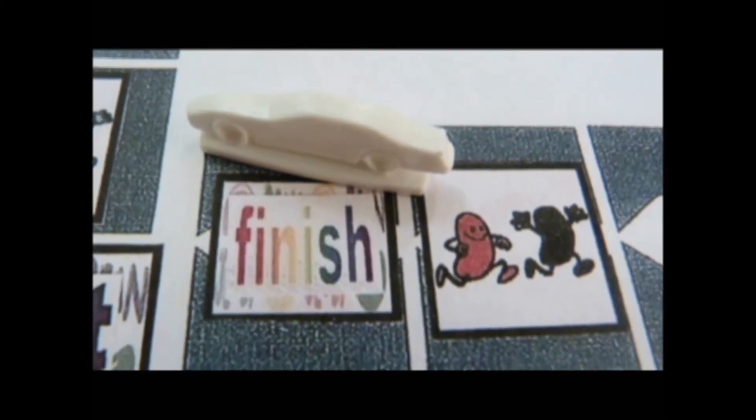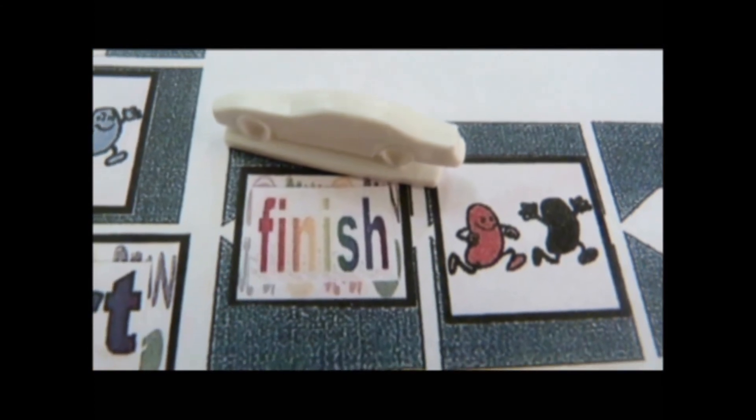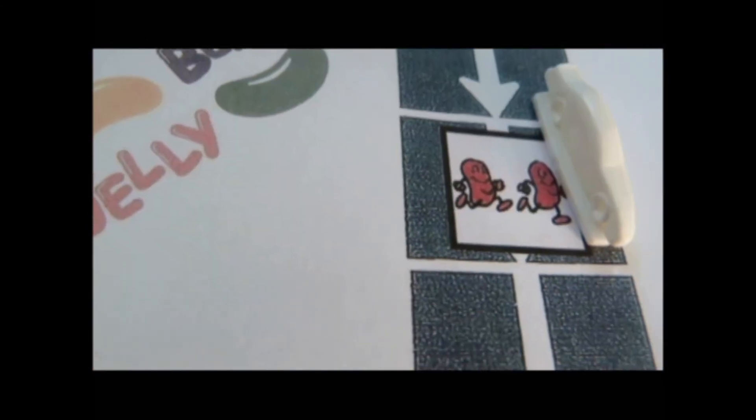A player with 100 points continues to spin and move toward the finish line. But don't land on any Jelly Bean spaces or it is the next player's turn.